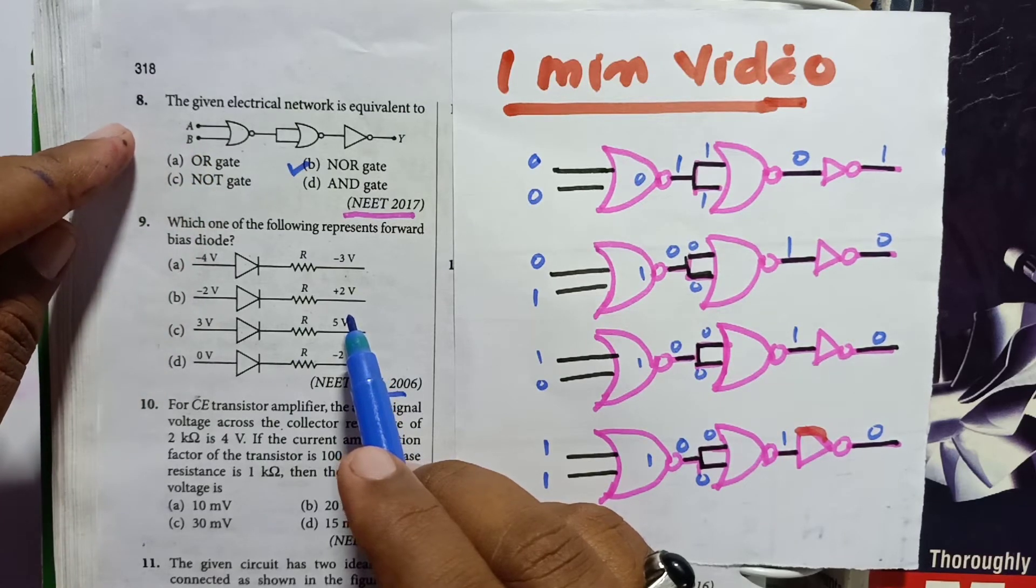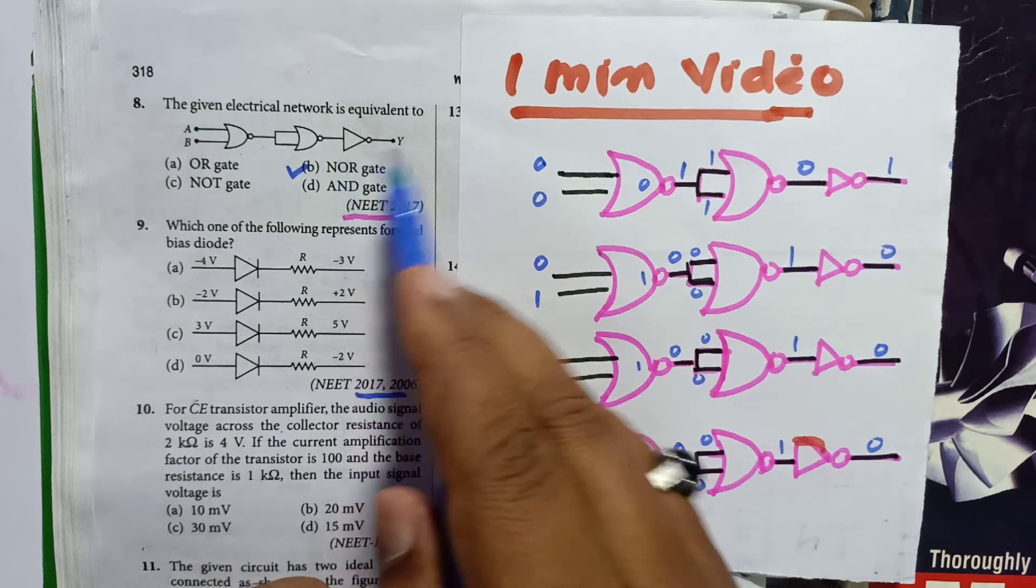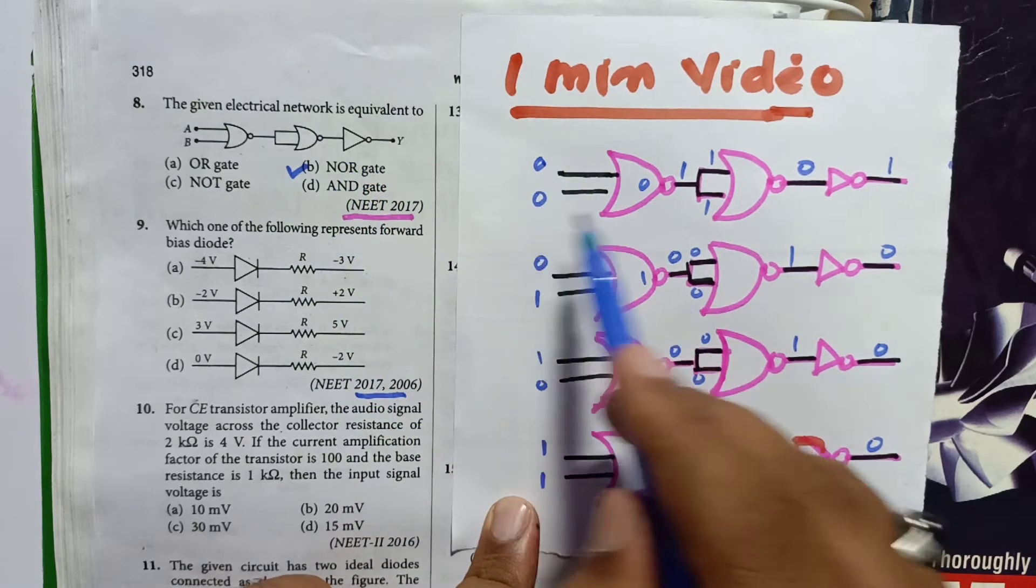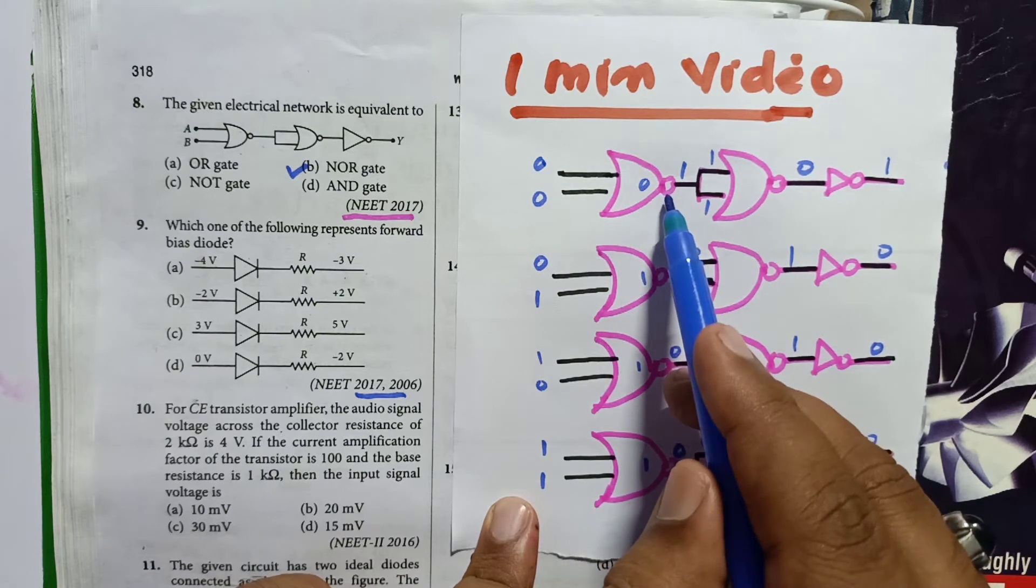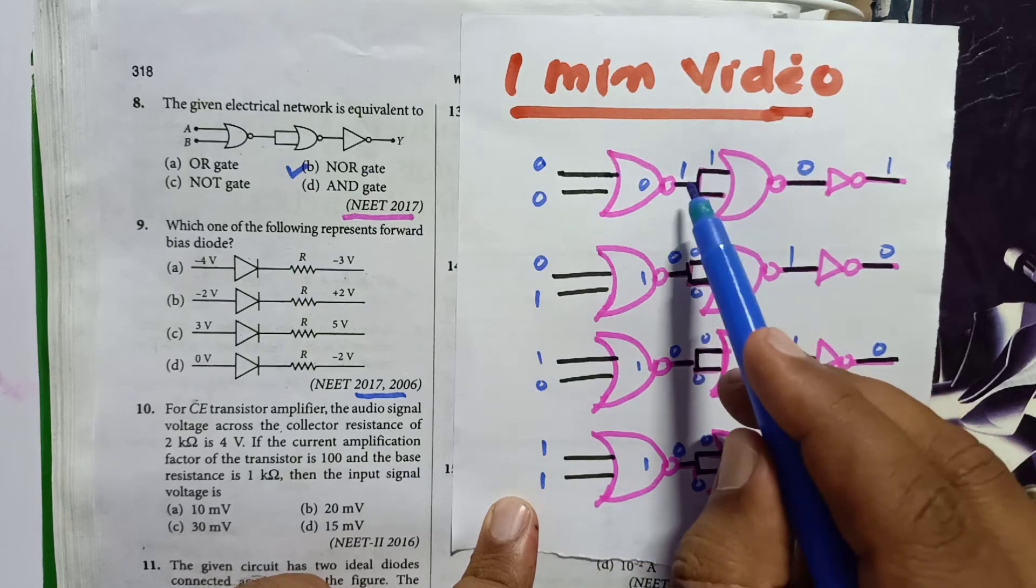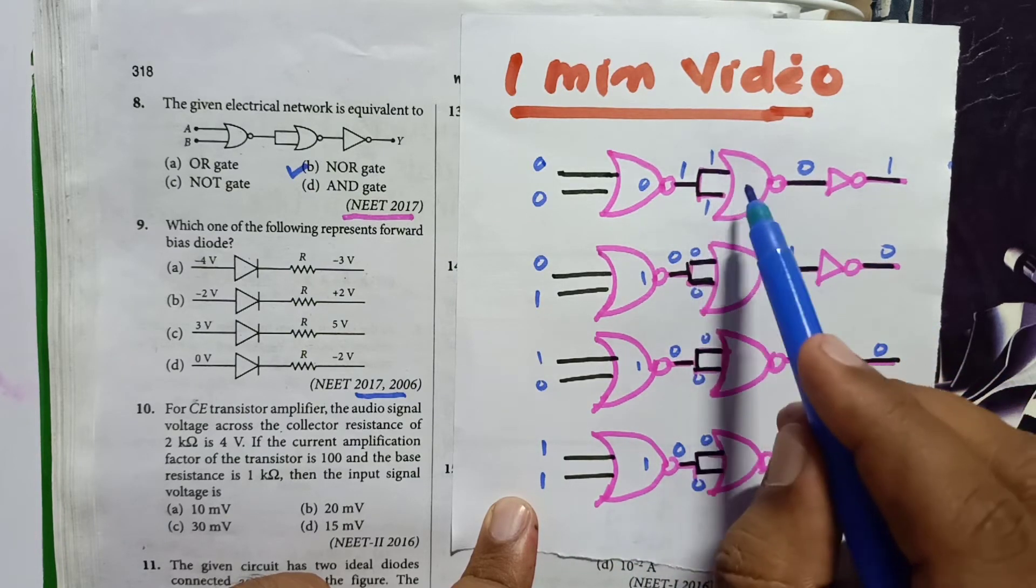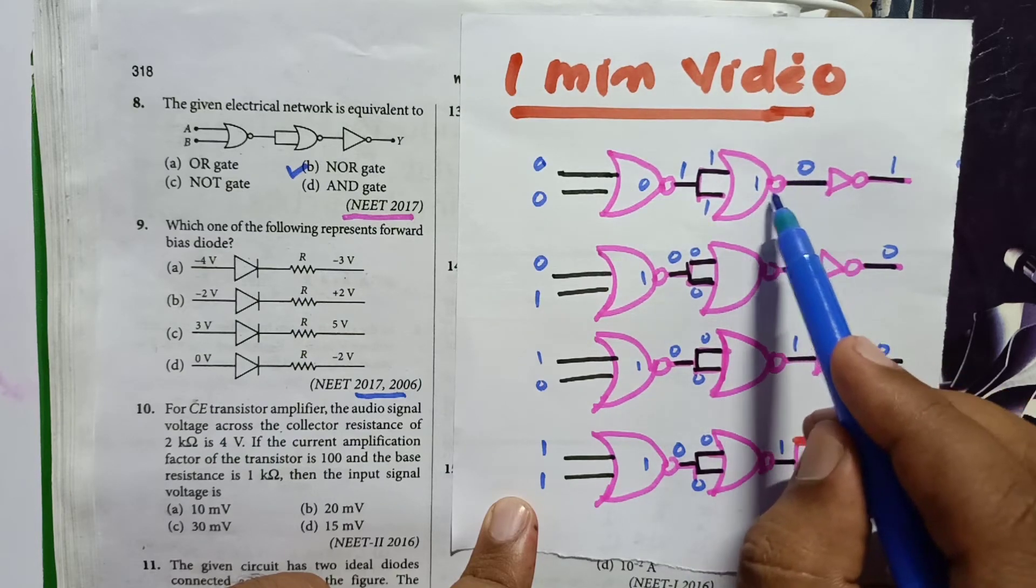Let us discuss the eighth question first. What type of gate is it? He is asking, the combination of these three gates will become which type of gate. So 0, 0 means it is OR gate, so 0 plus 0 is going to be 0, because of bubble it will become 1. This is 1 means this is 1 and this is 1, so output will become how much here? 1 plus 1 is 1 here and output will become 0 after crossing the bubble.